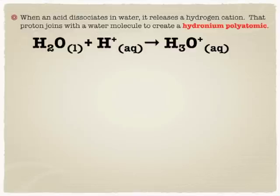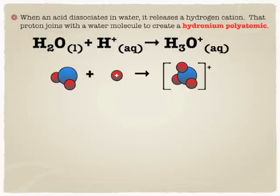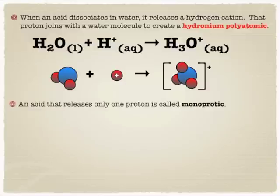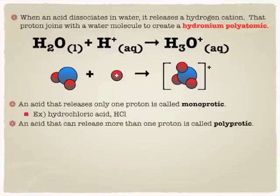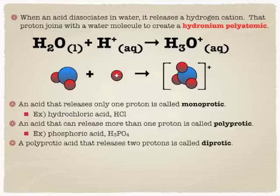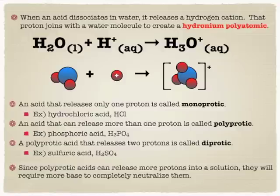Sometimes you'll see acids written as H+ aqueous, and other times you'll see them written as H3O+ aqueous, the hydronium polyatomic. Some people just like to write H+ knowing that when it's in water it's going to jump on water and form that hydronium. They're both really equivalent terms. Now, if something only dumps out one proton it'd be called monoprotic, something like hydrochloric acid. But if you dump out more than one proton in solution — something like sulfuric or phosphoric acid — those would be called polyprotic. And if you only dump out two, that's a type of polyprotic known as diprotic. The more protons an acid has to donate, the tougher it's going to be to neutralize, so by far the easiest acids to work with would be monoprotic.